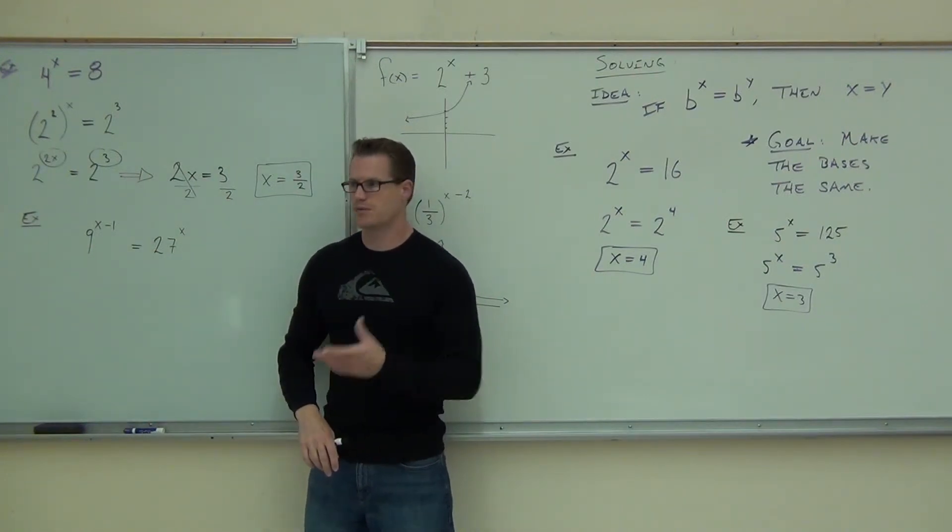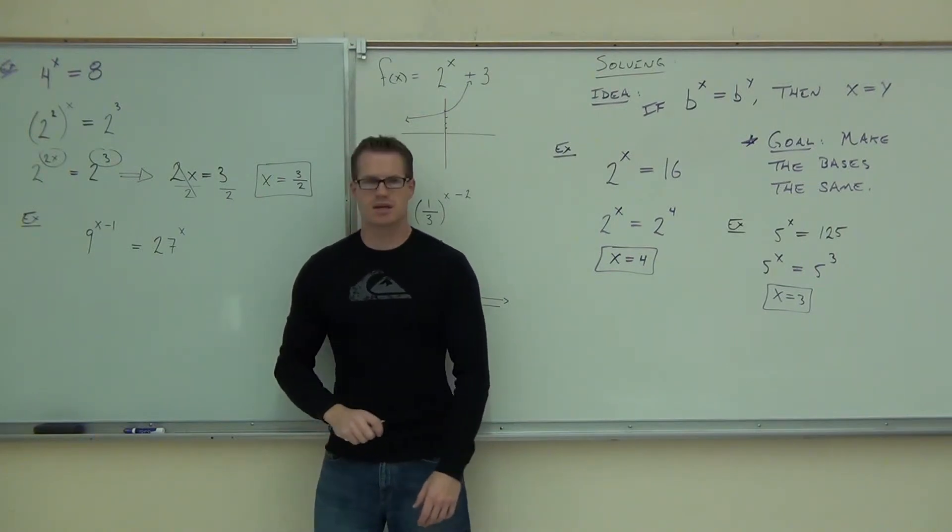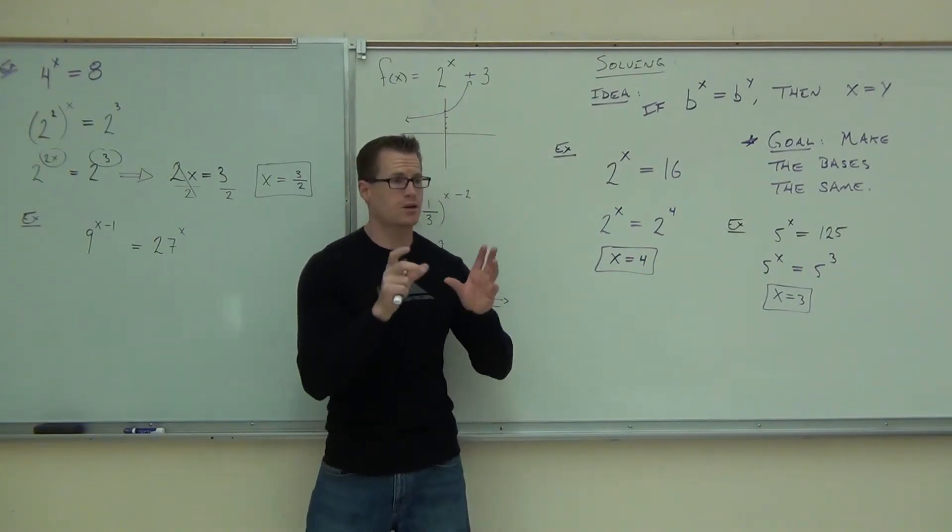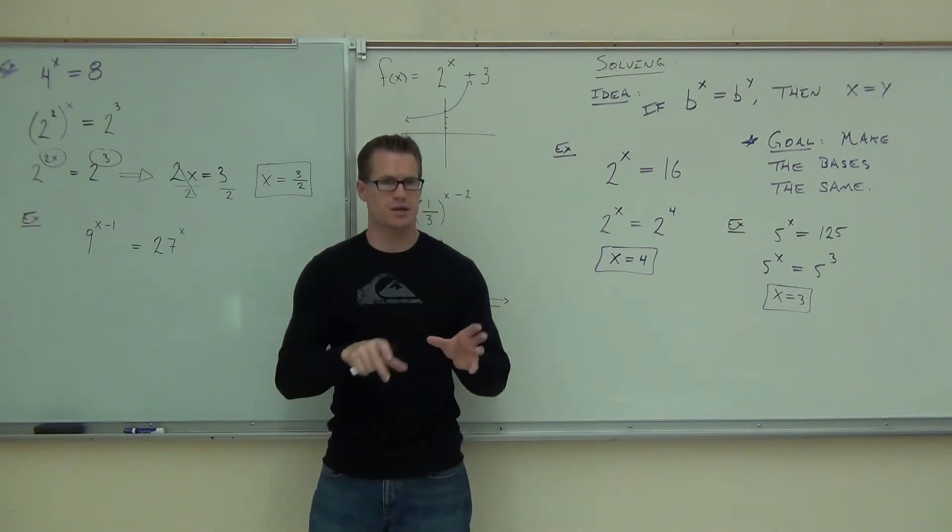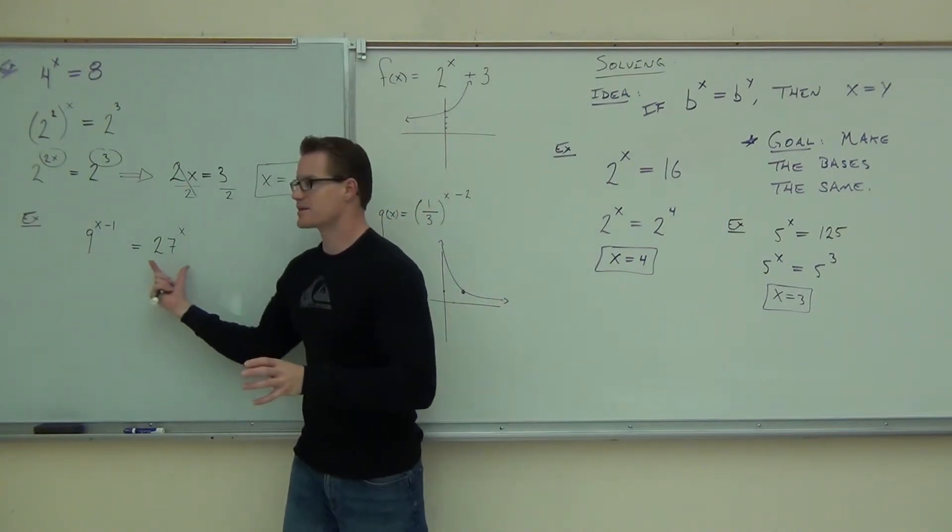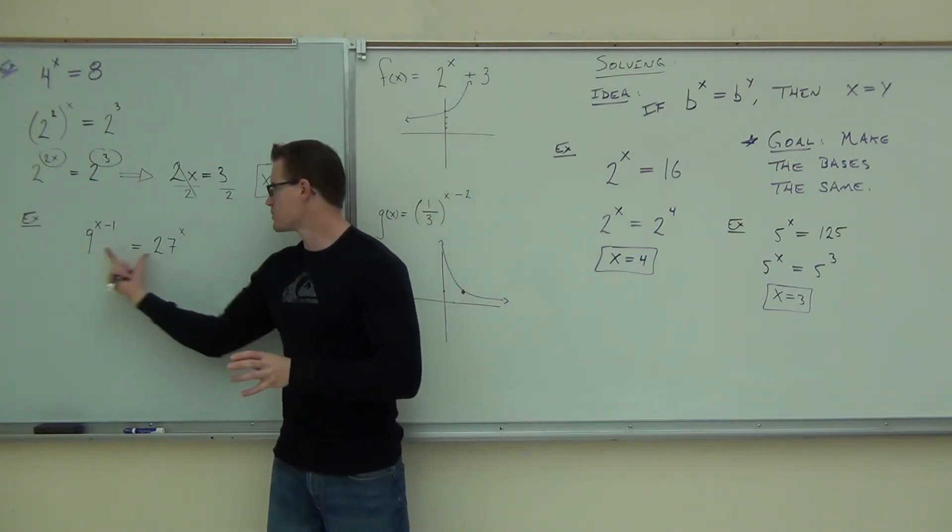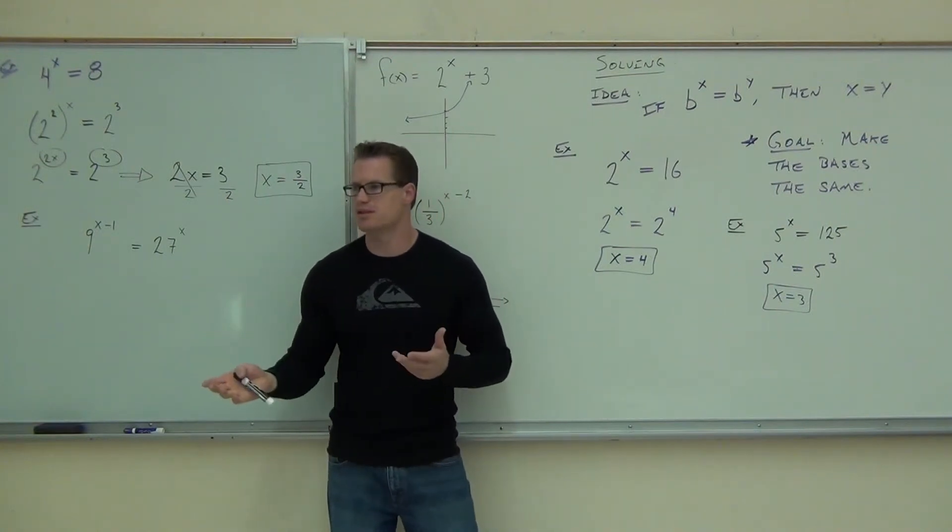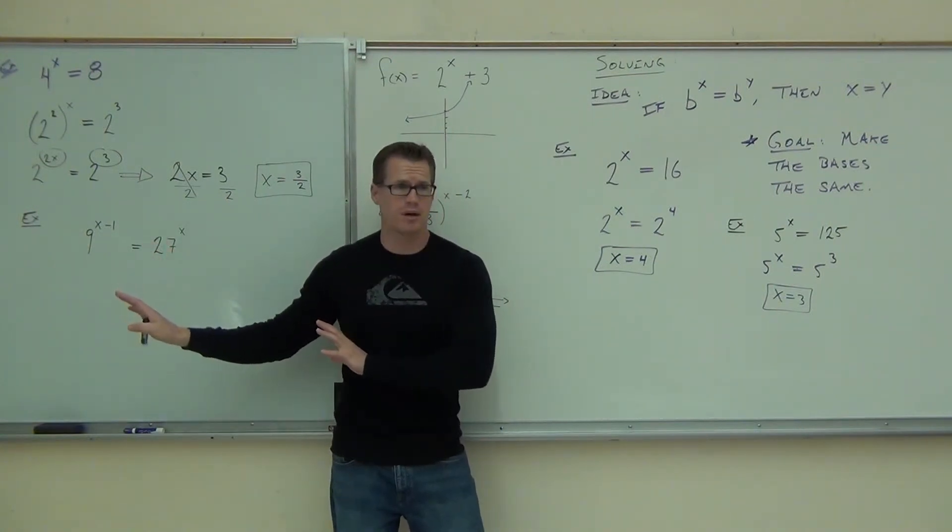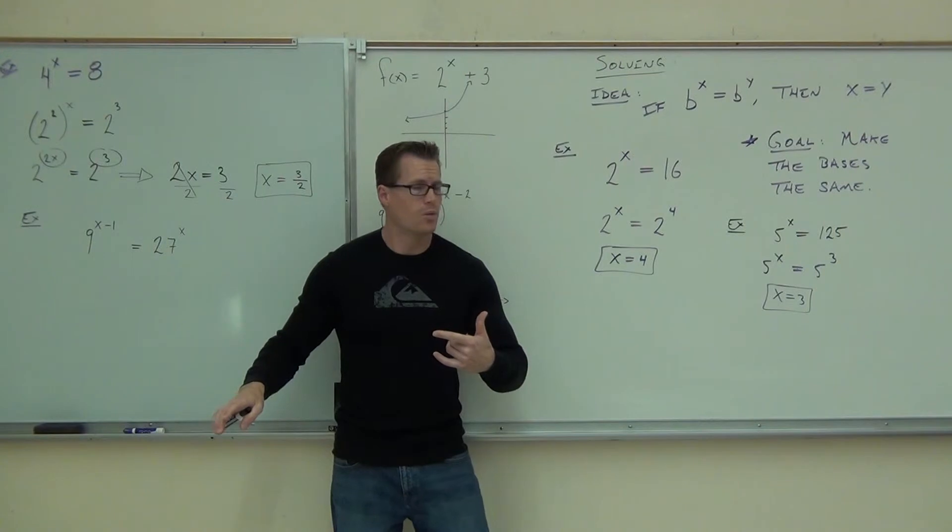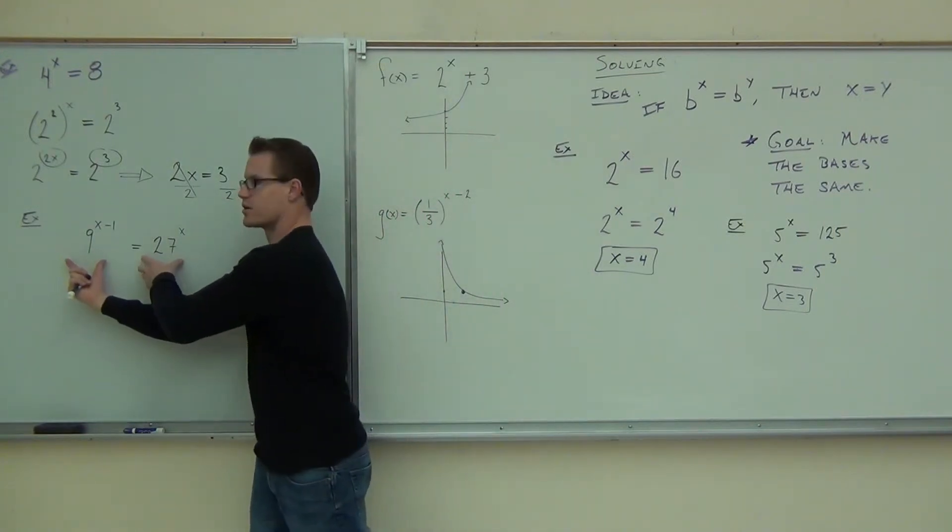I mean, if you try 9 squared, you're getting 81, right? So, I mean, you can't do that. However, can you look for a number within 9 and 27 that you could write both of them as some power of? Yes. So, you go 9, 27. Those should have a common base somewhere in there. Otherwise, you can't do this problem. So, you're always looking for that. What number do they share as a base? 3.